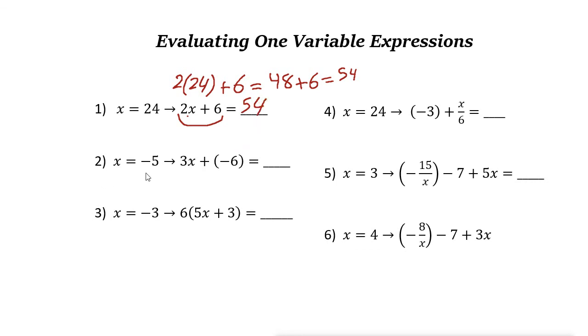Next one, x is negative 5 this time. So 3x plus negative 6. Then instead of x, just write negative 5. But remember that 3x means 3 times x. So it is 3 times negative 5 plus negative 6. Now 3 times negative 5 is negative 15. Plus negative 6 equals to negative 21. So the answer here is negative 21.